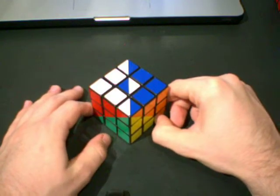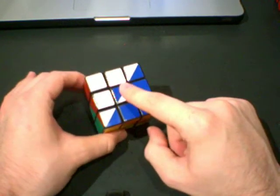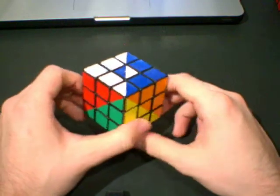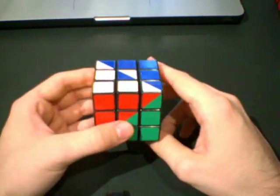The other scenario that you can get is where you have one center that's misoriented by 180 degrees, as I said before. This one's really easy to fix. All you have to do is this algorithm.